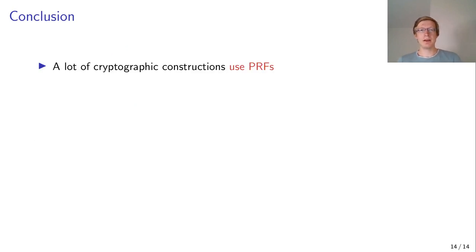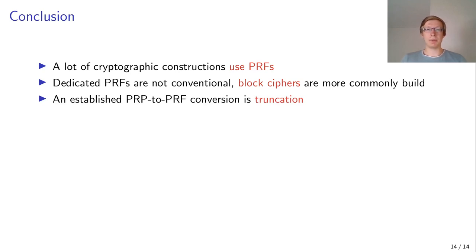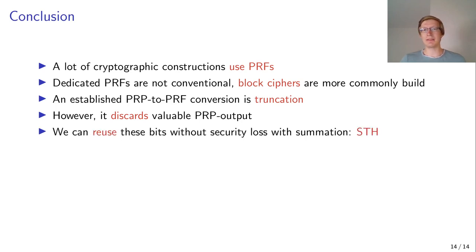Concluding, we have seen that a lot of symmetric cryptographic constructions use PRFs, but building PRFs is not conventional — block ciphers are more commonly built. So we might as well look at PRP-PRF conversions, and one such established conversion is truncation. However, it discards some valuable PRP outputs that still contain some entropy, so we may want to look at reusing it using summation. And it turns out that we can do that without any security loss, leading to the STH construction.